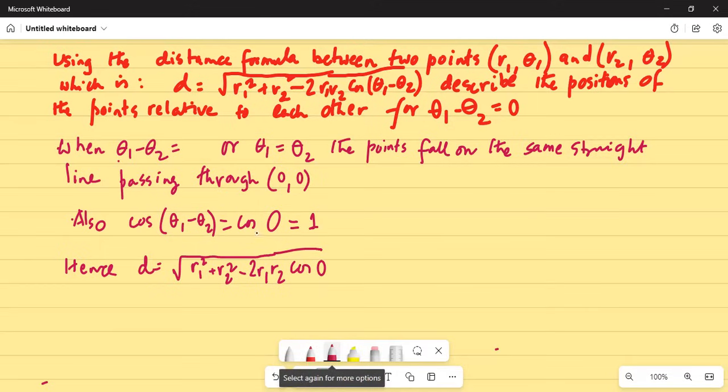d equals r1 squared plus r2 squared minus 2 r1 r2 cosine of zero. Now cosine of zero is one, so we can write d equals square root of r1 squared plus r2 squared minus 2 r1 r2.